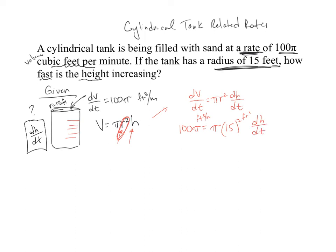So here we end up with 100, and the π is reduced, over 15 squared, which is 225, dh/dt, which gives me a final value of dh/dt of 4/9, which is about 0.4 repeating.